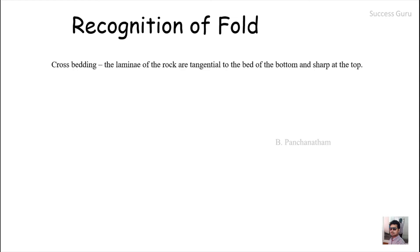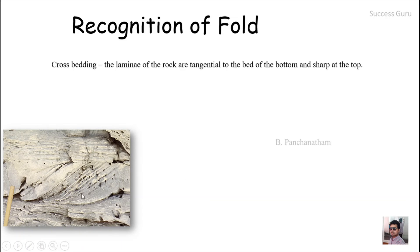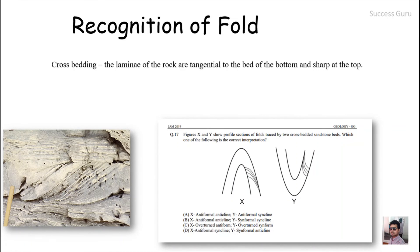The first tool is cross bedding: the laminae of rock are tangential to the bed at the bottom and sharp (truncated) at the top. From the image, cross bedding has a tangential relationship with the older sequence and truncates at the younger sequence, allowing us to identify top and bottom. Returning to the JAM 2019 question — the younger beds are at the center and it is an antiform, but since younger rocks are at the core, it is an antiformal syncline. The answer is option D.